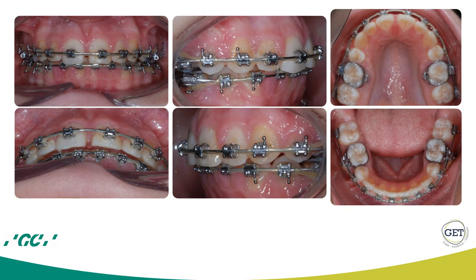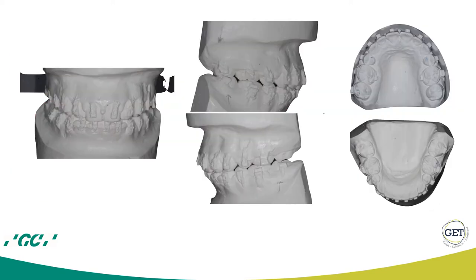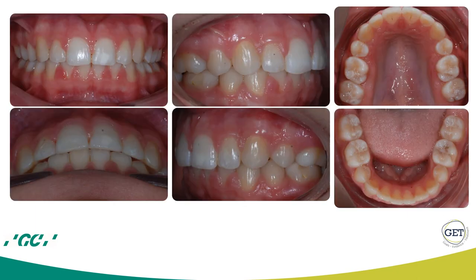After the first bracket repositioning, I go up to working wires — 19×25 steel or 21×25 steel, according to the kind of slot you use. After six to eight weeks in working wire, I take a second repositioning in articulator mounting, and in the second repositioning I reposition the brackets in order to achieve maximum intercuspation and to come to a good occlusal result.